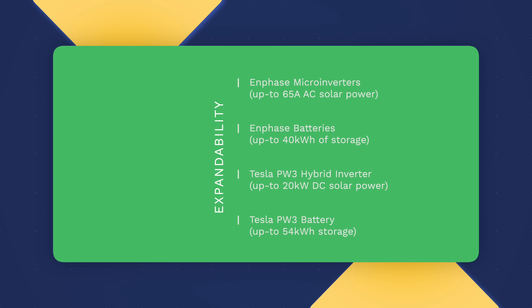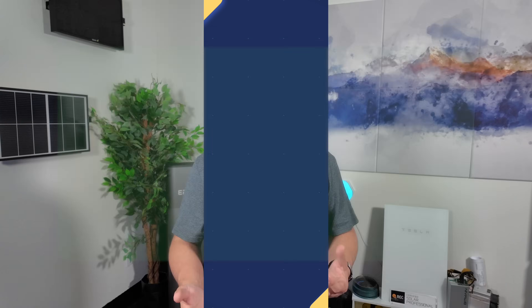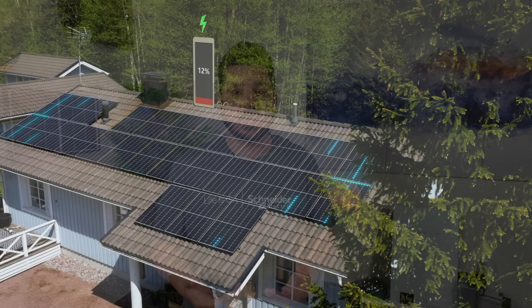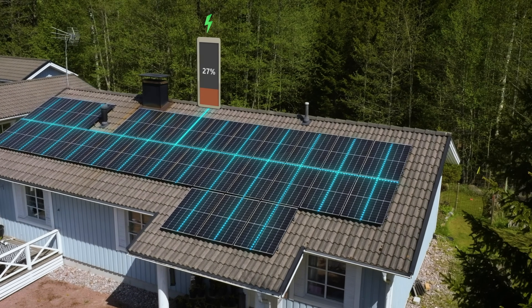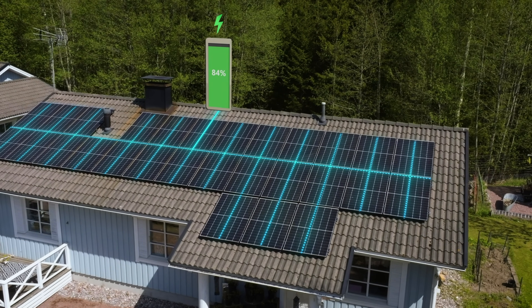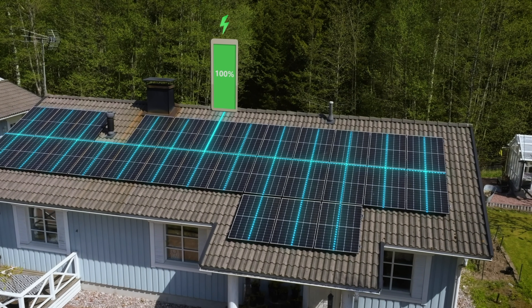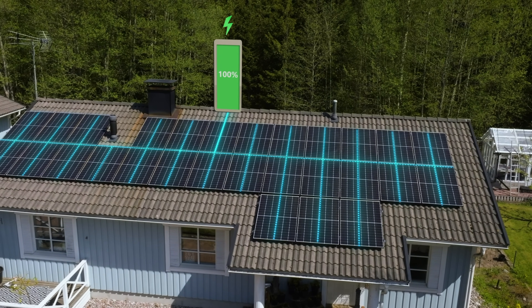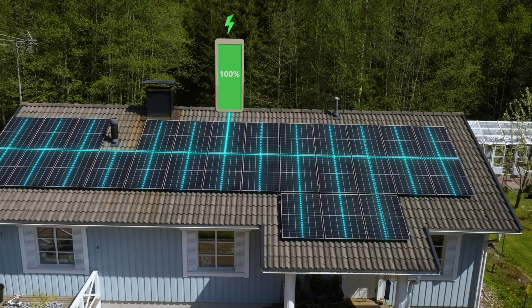Both systems have great advantages when it comes to expandability. Enphase microinverters make it easy to expand your solar system over time, and the Powerwall 3's hybrid inverter supports up to 20 kilowatts of solar with 6 MPPTs, which allows for that as well. The data supports you'll likely see more energy out of the Powerwall 3 due to less efficiency loss in round-trip conversion — that 3–4% difference depending on your location is definitely something to consider when comparing the two technologies.